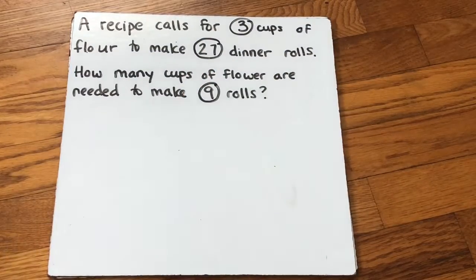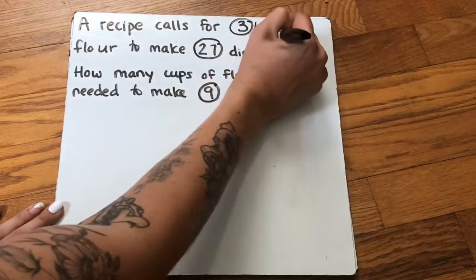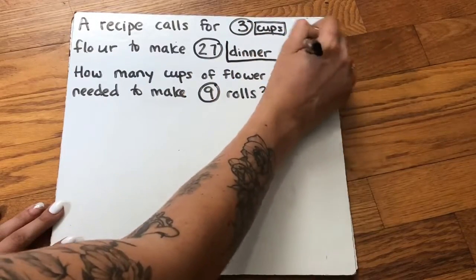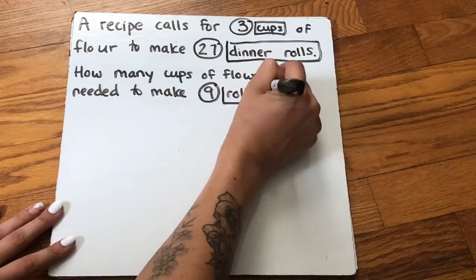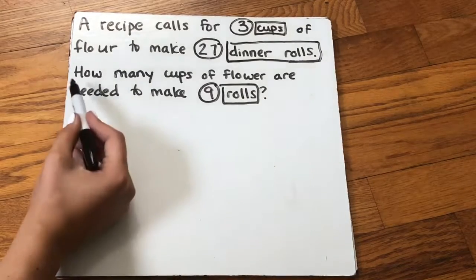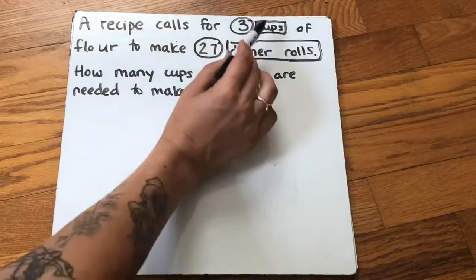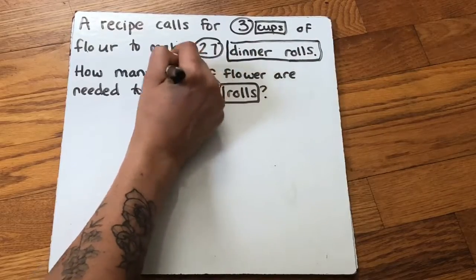Then I need to box all my keywords or vocabulary. One thing we always box is what goes along with those numbers. So three — we're talking about three cups. 27 — we're talking about 27 dinner rolls. And nine — we're talking about nine rolls. The question asks how many cups, and I have cups up here, so that seems important. I'm going to box cups. I don't see any other vocabulary words.